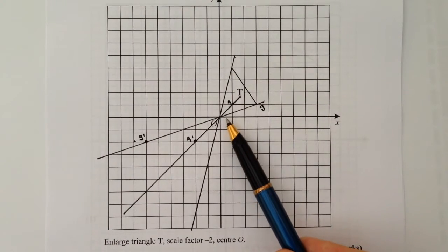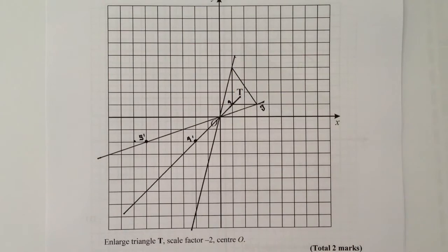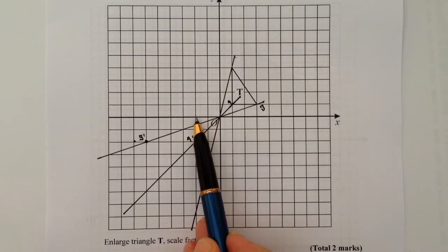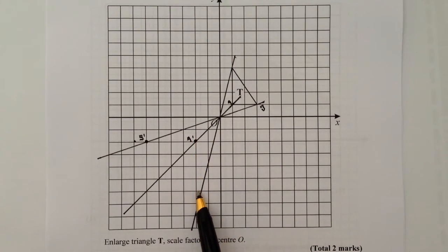And then the last one, I'm going to go along 1 and up 1, 2, 3, 4. Again, I'm going to double that, so I'm going to go along 2, and I'm going to go down 2, 4, 6, 7, 8. It's not a fantastic drawing, I'm afraid. It's quite difficult when you're on a video to draw these particularly well.